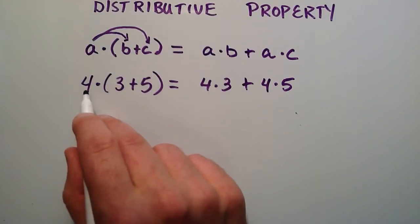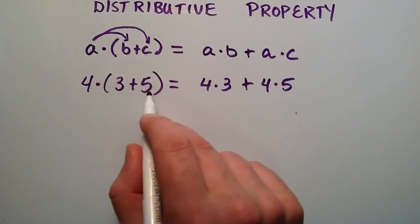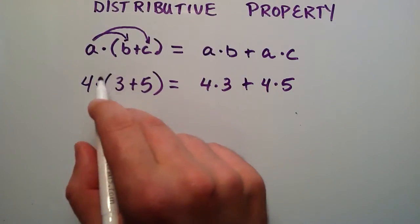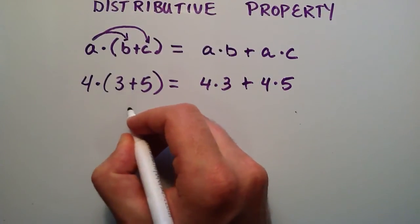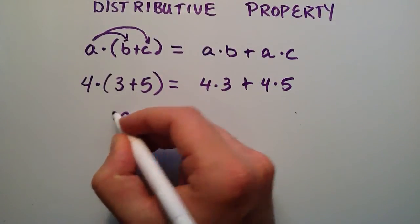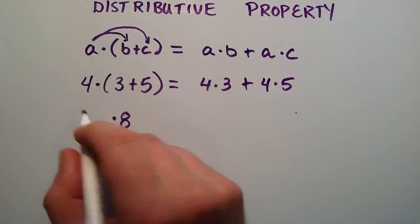So 4 times 3 plus 5, doing order of operations we do what's inside the parentheses first, so this is going to be 3 plus 5, and 3 plus 5 gives us 8, and then we're going to take that result and multiply it by the 4.